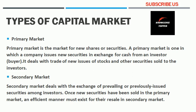A primary market example is an IPO — Initial Public Offering. If any company wants to issue shares or bonds for the first time, it issues an IPO in the primary market. Those IPOs can then be traded afterwards in the secondary market. An example of the secondary market is any stock exchange, such as the New York Stock Exchange or stock exchanges in different countries.